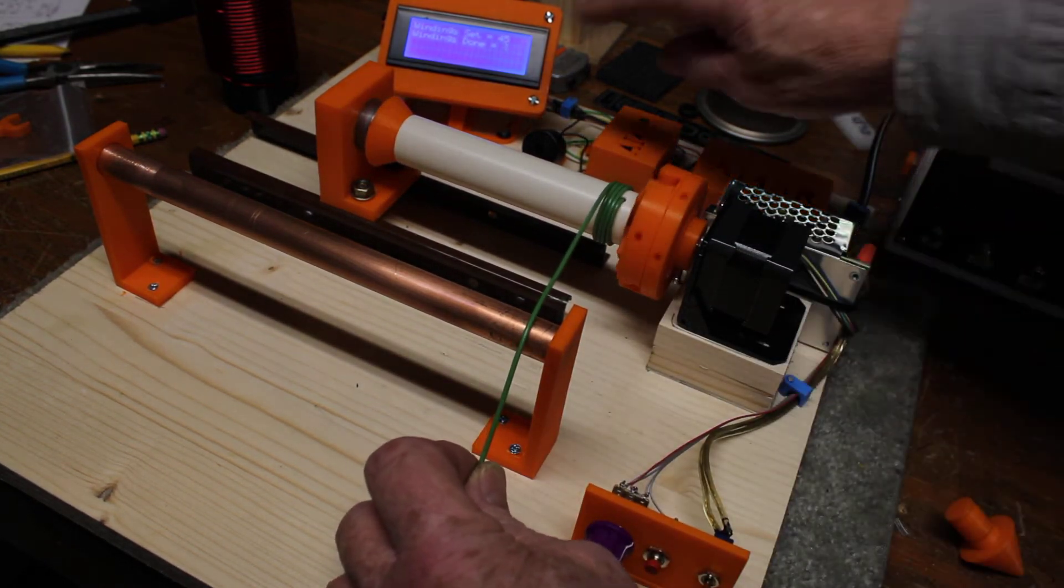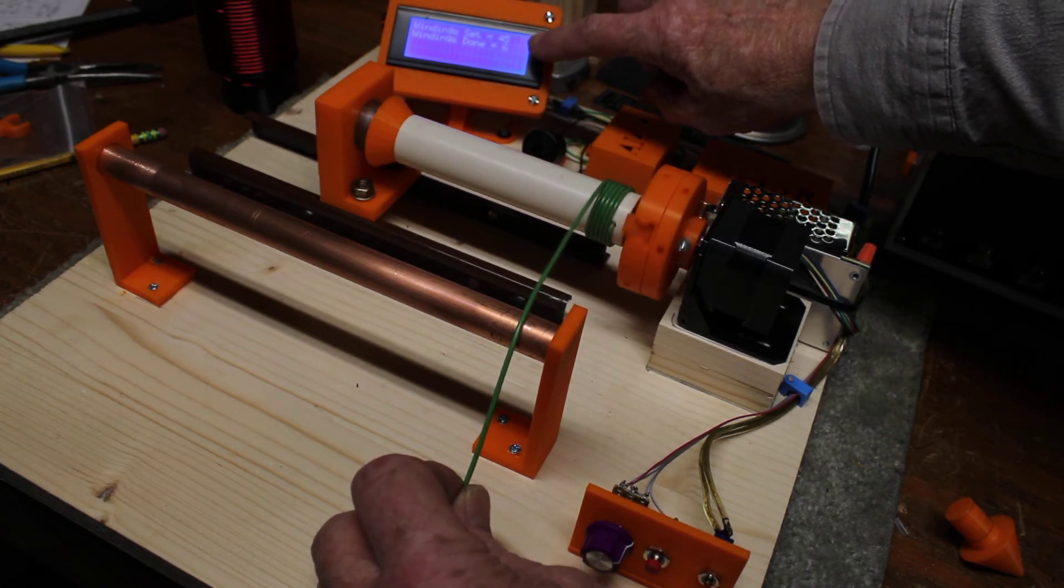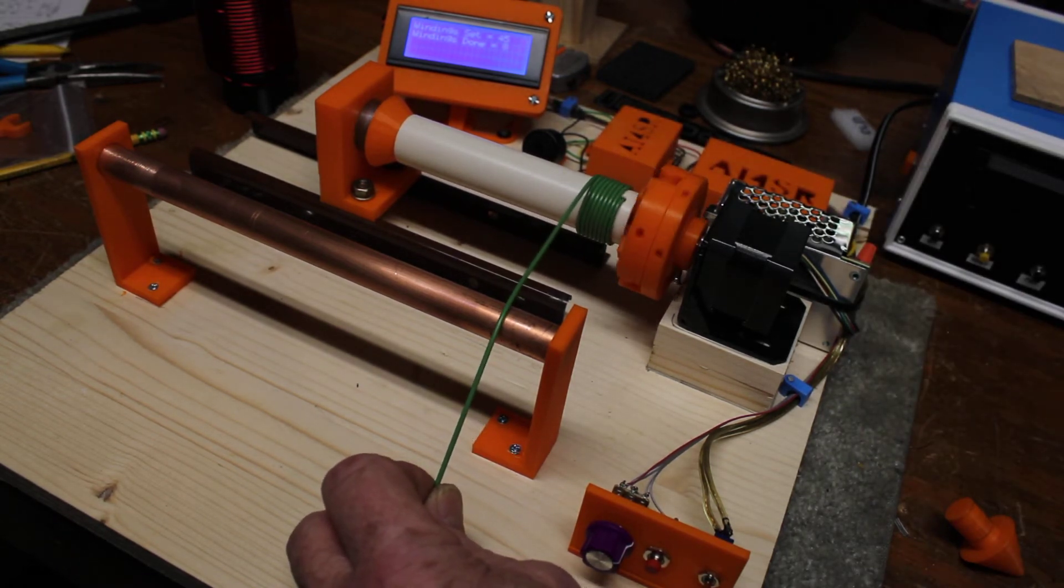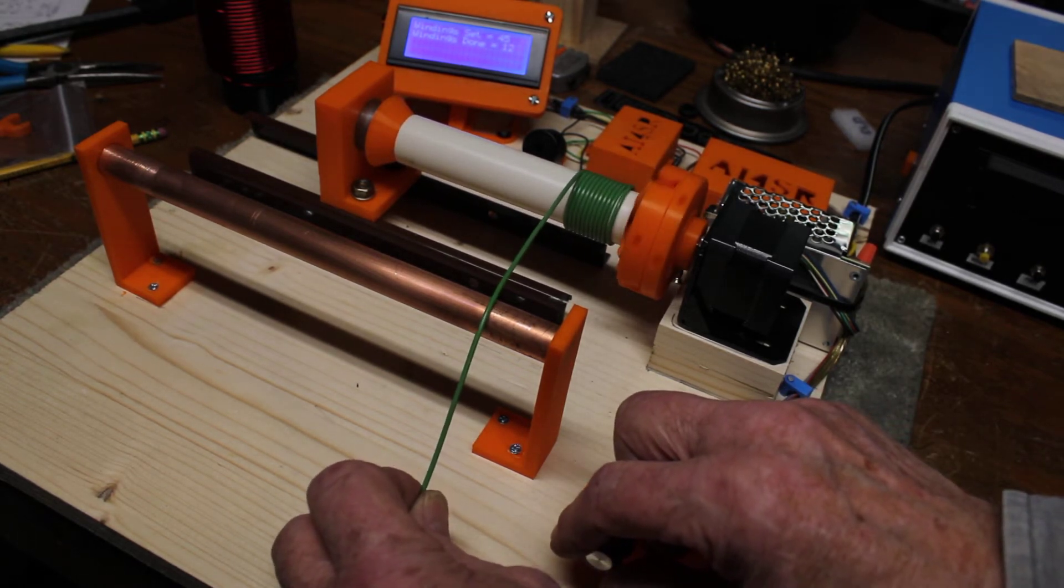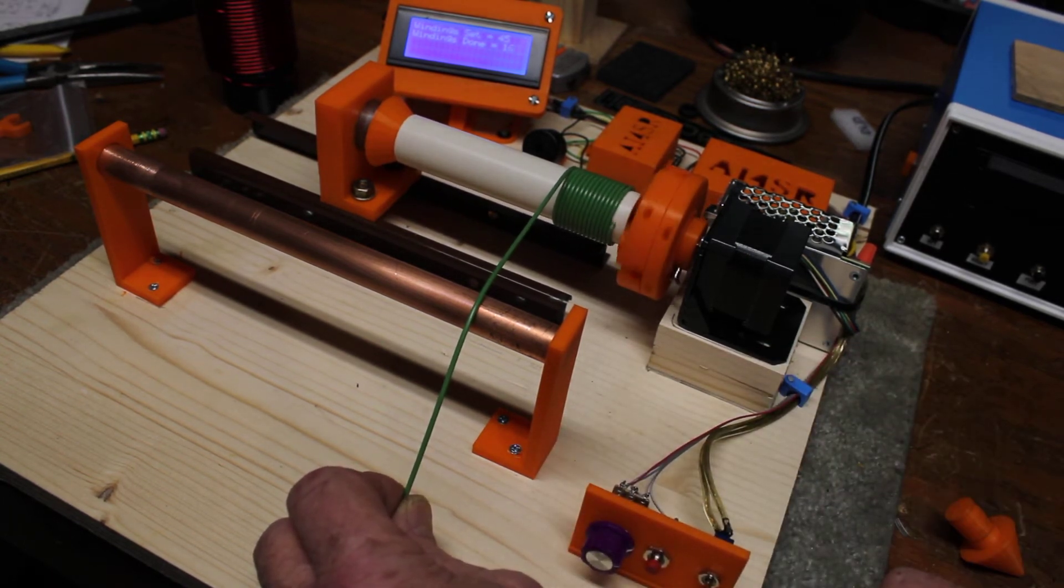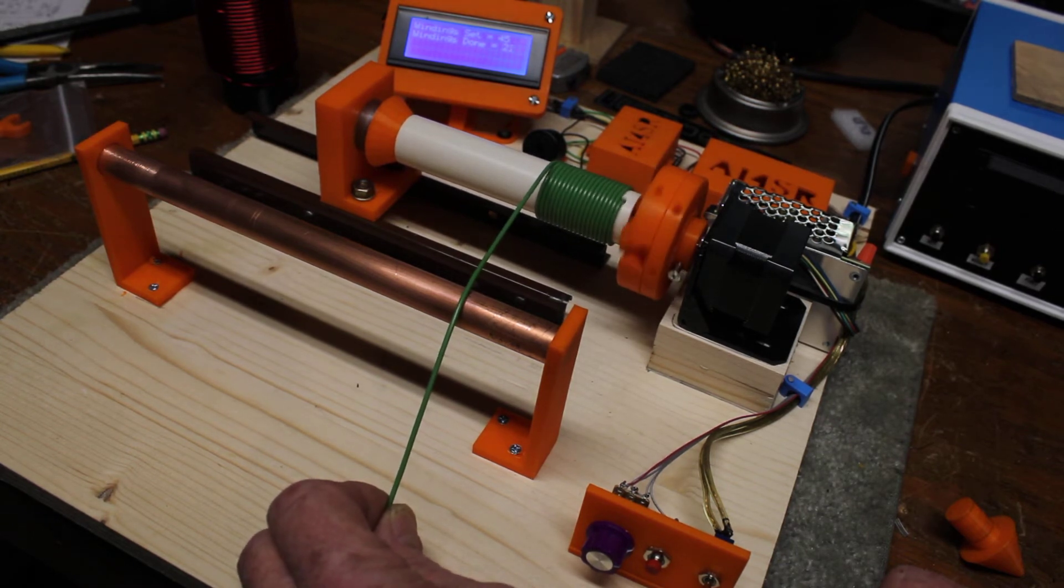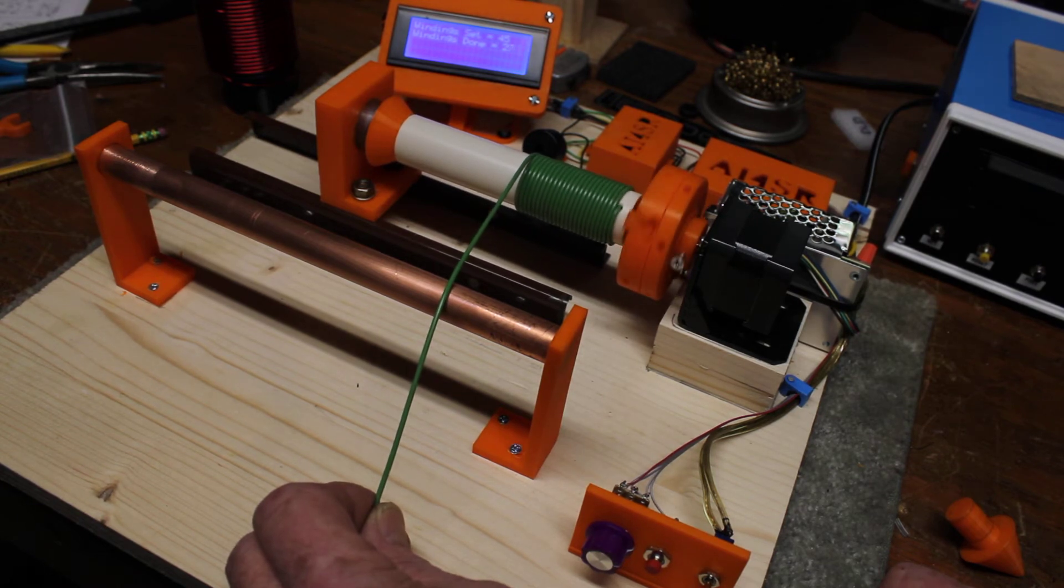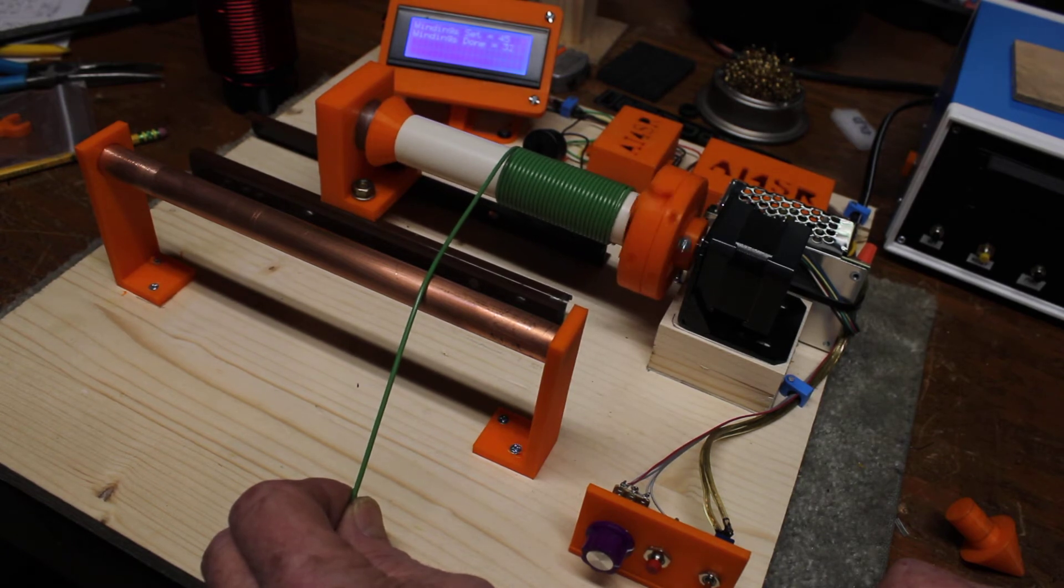And you can see she's counting the turns. We've got 45 turns set. It's done seven so far. We'll just keep feeding. I can speed it up a little more if I want. We're now at 12 turns. 14 turns. 15. 24. She'll automatically stop when she gets to 45 turns. 30 turns. Assuming I programmed it right.